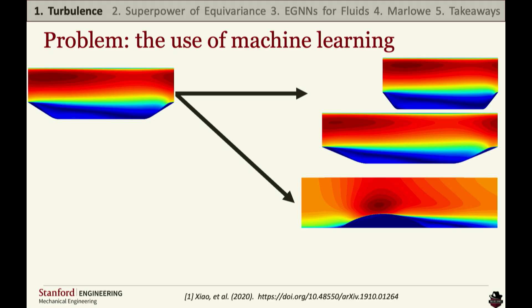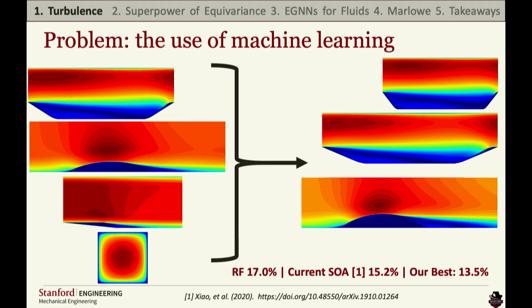We took the largest readily available dataset, which includes four different geometries across 28 simulations with different flow speeds, and applied it to the same problem. We saw that a random forest can really match any state-of-the-art model, and our in-house best barely beat it. So we came to a crossroads where we either needed a lot more data, or we had to do something completely different.